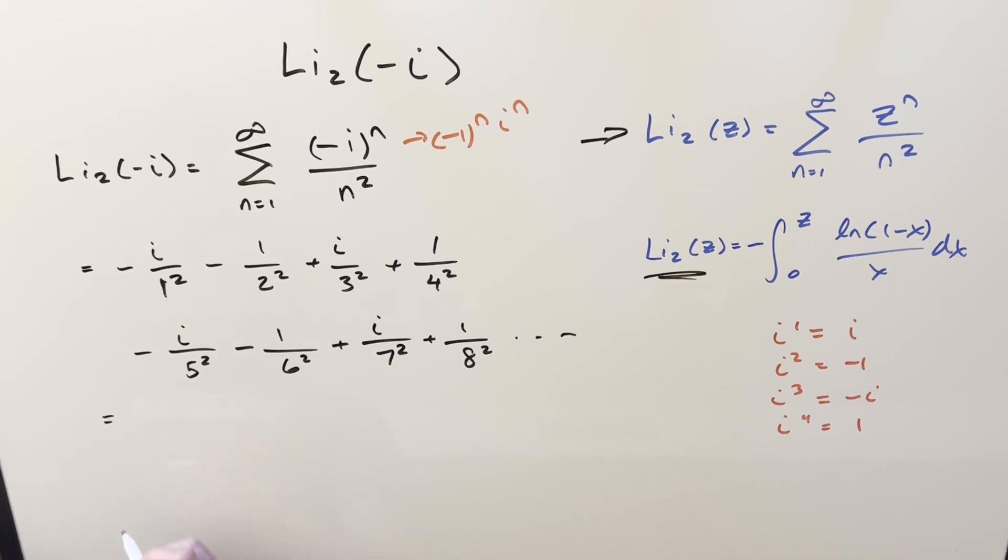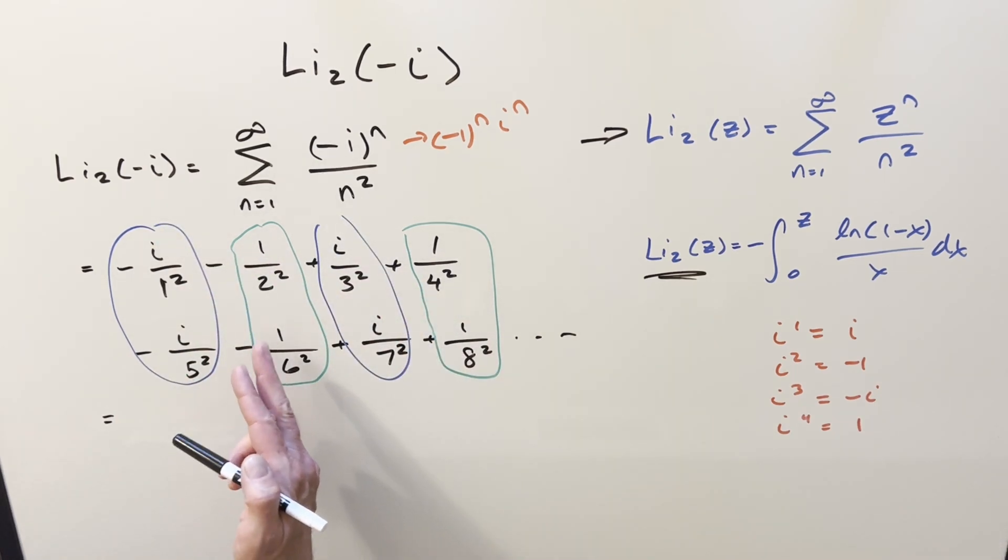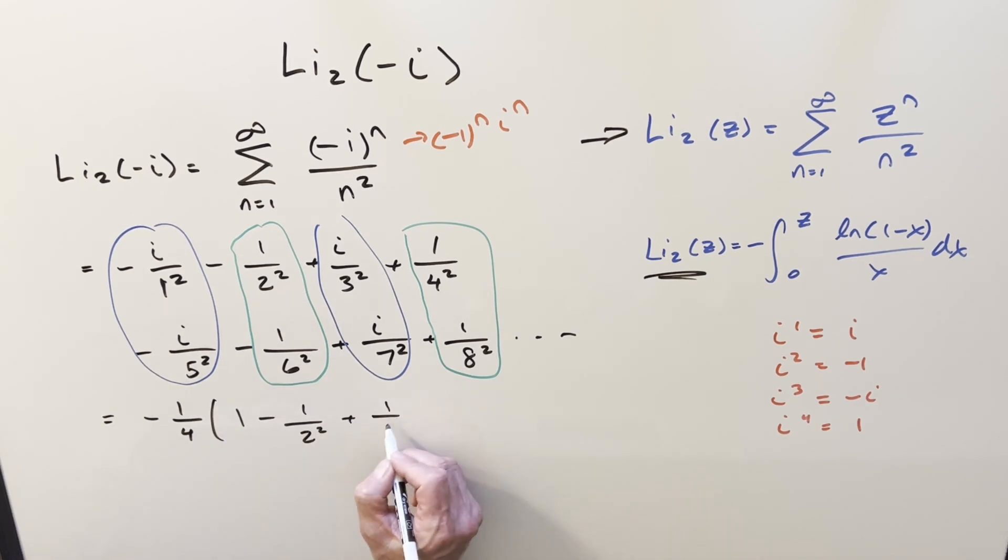Now for the next step, we can separate out the real part from the imaginary part. We'll notice that all the even terms are going to be real, and all the odd terms are going to be imaginary. So first I'll capture all the real terms. Because they're all even, I can factor out minus 1/4. And when you do that, you get 1 minus 1 over 2 squared plus 1 over 3 squared minus 1 over 4 squared. You can look at this as 1 squared. So this is just counting up, alternating signs, on to infinity.